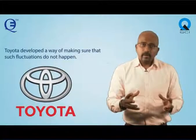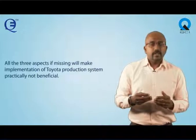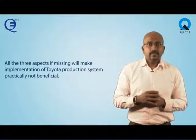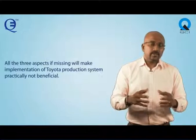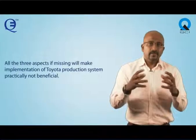Toyota developed a way of ensuring such fluctuations do not happen. They developed a product mix that was not allowed to change dramatically from month to month, and they worked hard on controlling the demand mix. But not all companies have the ability to influence the product mix. If all three stability aspects are missing, implementation of the Toyota Production System will be practically not beneficial.